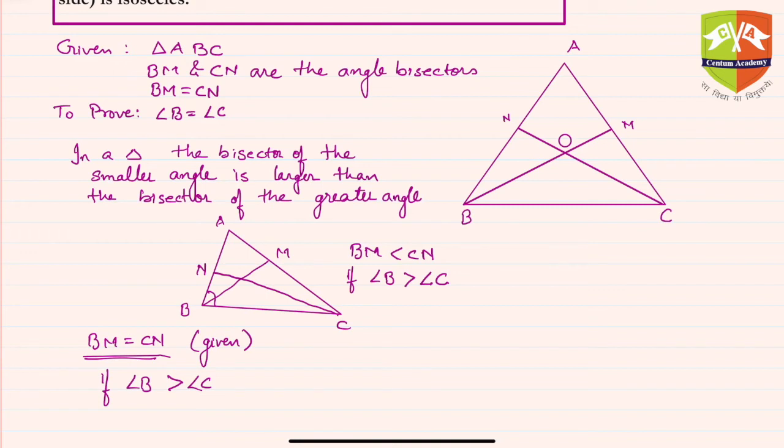Let's say if it was the case, then BM should be less than CN according to this particular theorem which we proved in the last case. So let's say case one, but this is not true because BM is less than CN—not true, not valid.